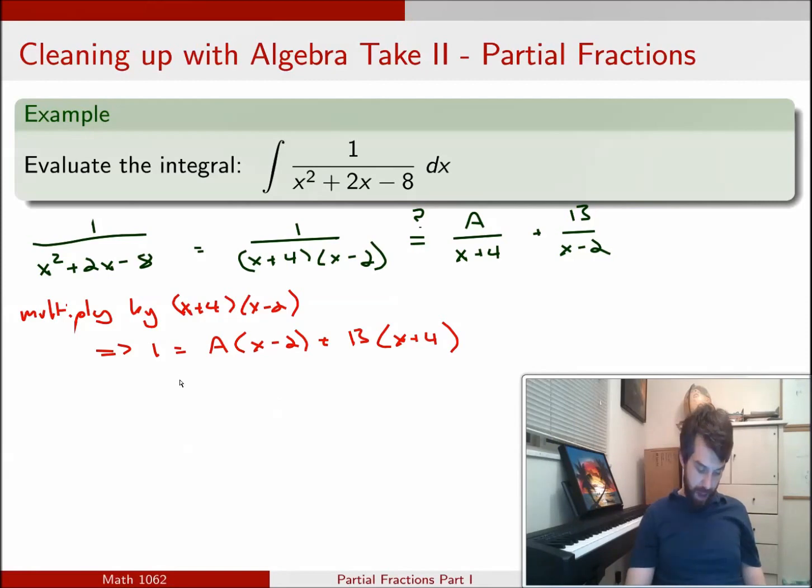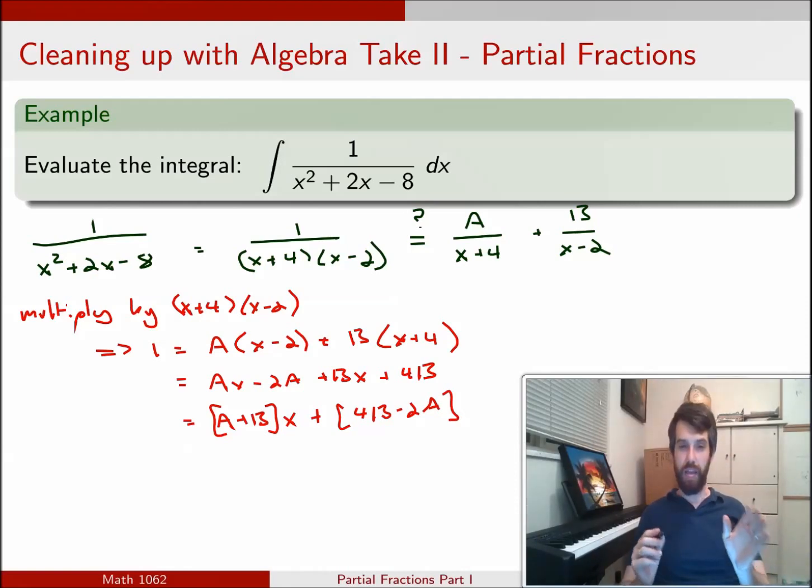I'm also going to expand what I have out. This is going to be Ax minus 2A plus Bx plus 4B, and I'm going to clean it up one more time as well. I'm going to write that it is A plus B all multiplied by x and then plus 4B minus 2A.